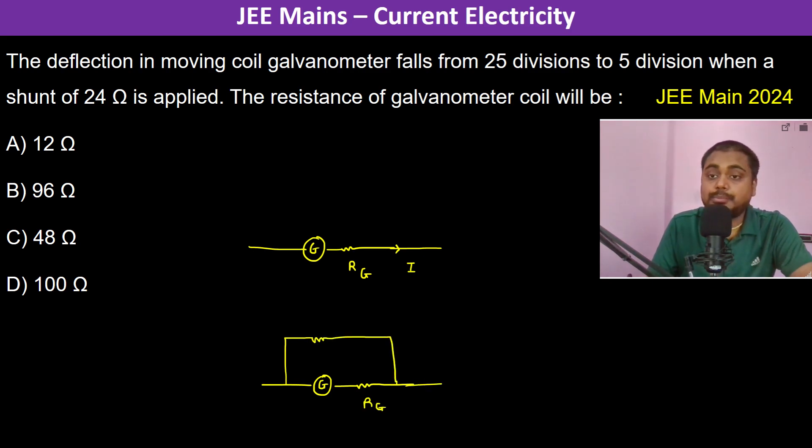The current drops to five divisions. So if it was I, the current is going to be I divided by 5 here. Therefore, the current which passes here is 4I by 5.